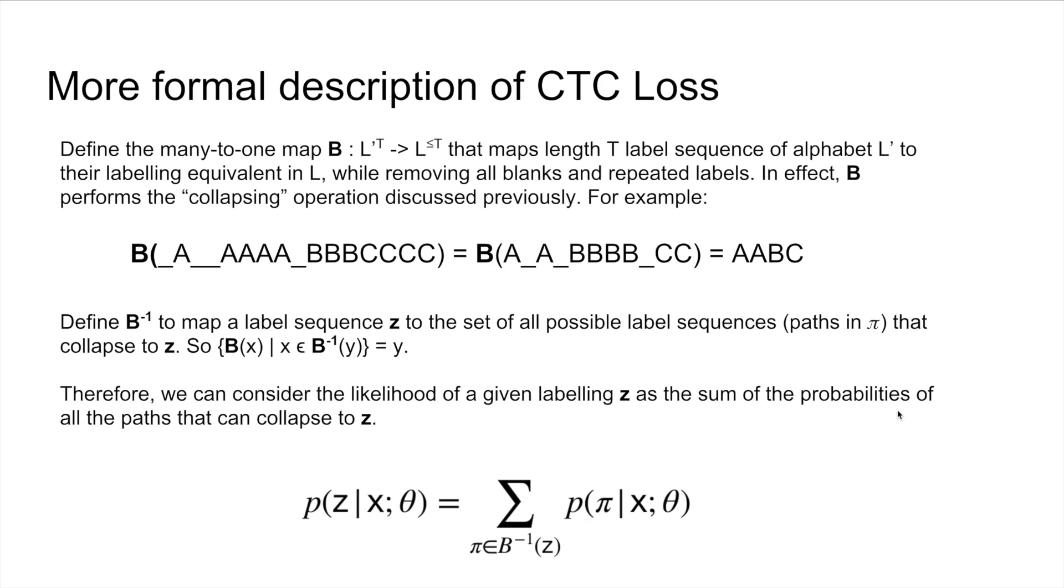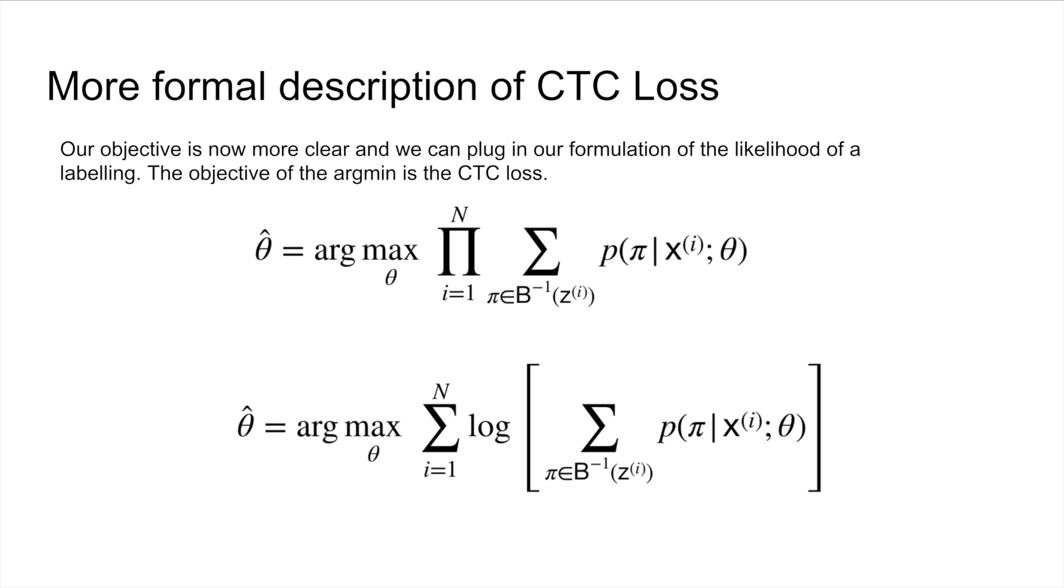Okay, so now we can talk about that collapsing function that we mentioned informally before. So let's define this many-to-one map B, which maps from the set of all possible paths to the set of labelings. And so B is performing this collapsing operation, which we defined before, and you can see in this example here. But we're also going to define B inverse. And B inverse is now a one-to-many map. So it goes from the labeling to all the possible paths that will collapse the labeling. And now we can denote the likelihood of a given labeling as the sum of the probabilities of all these paths that collapse to z.